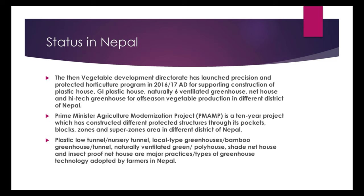The Prime Minister Agriculture Modernization Project is a 10-year project which has constructed different protected structures through its pockets, blocks, zones, and super-zones areas in different districts of Nepal.